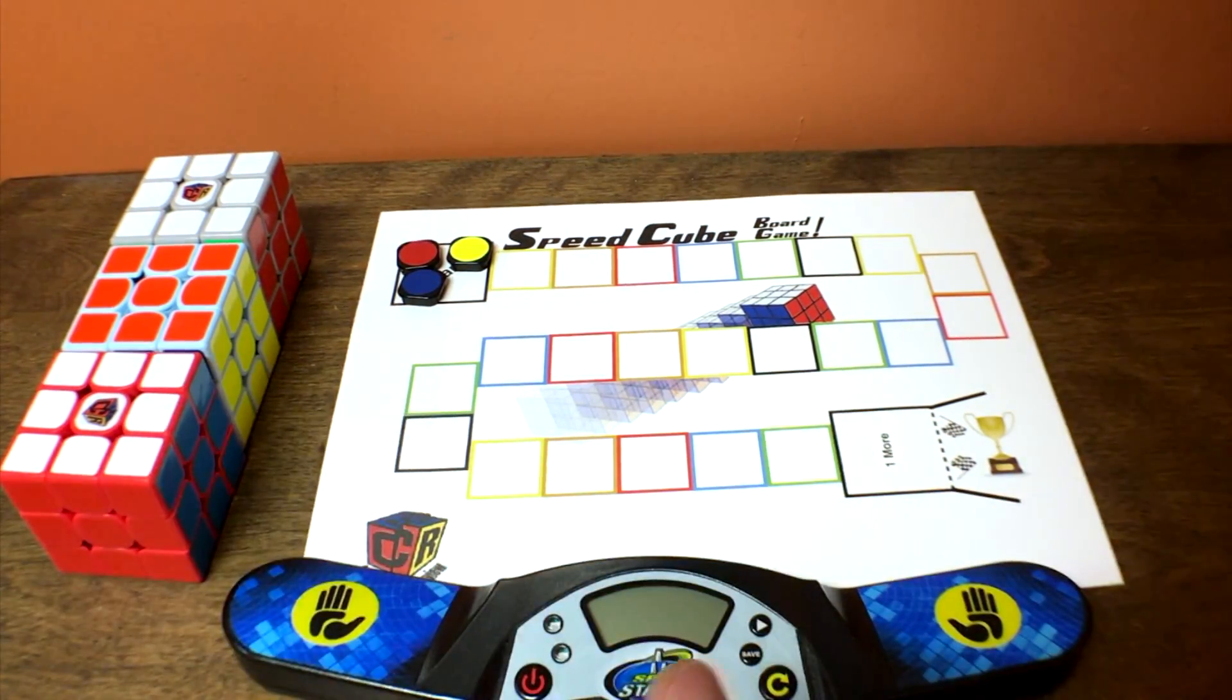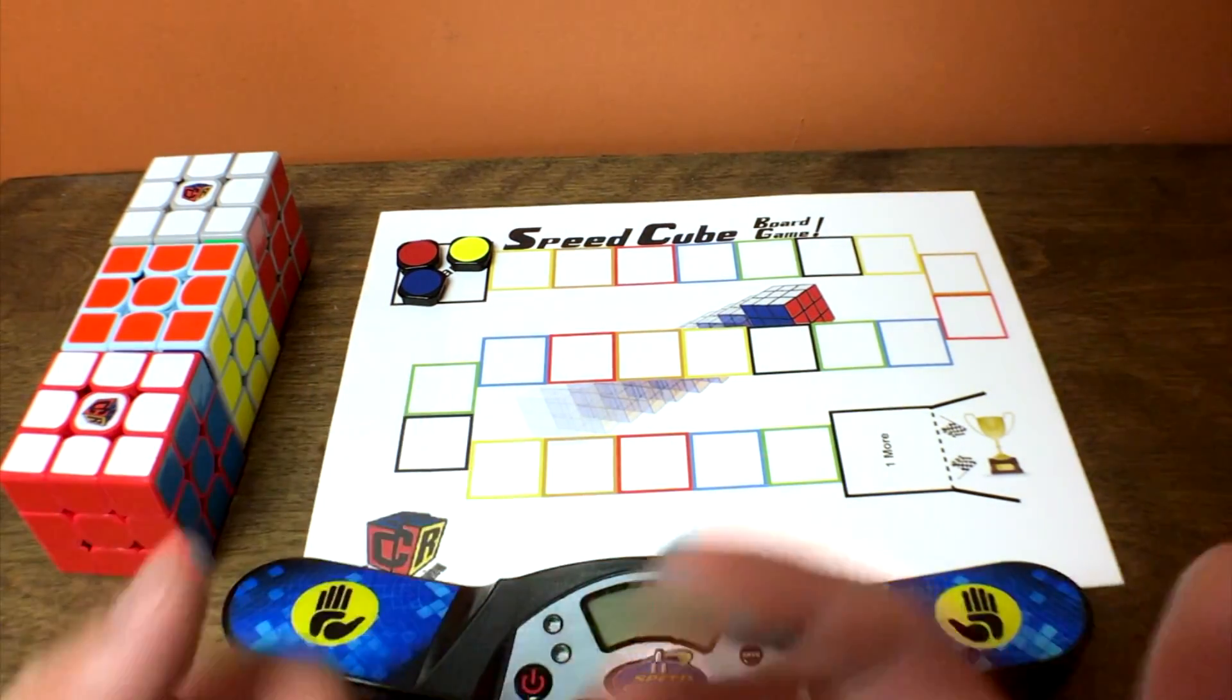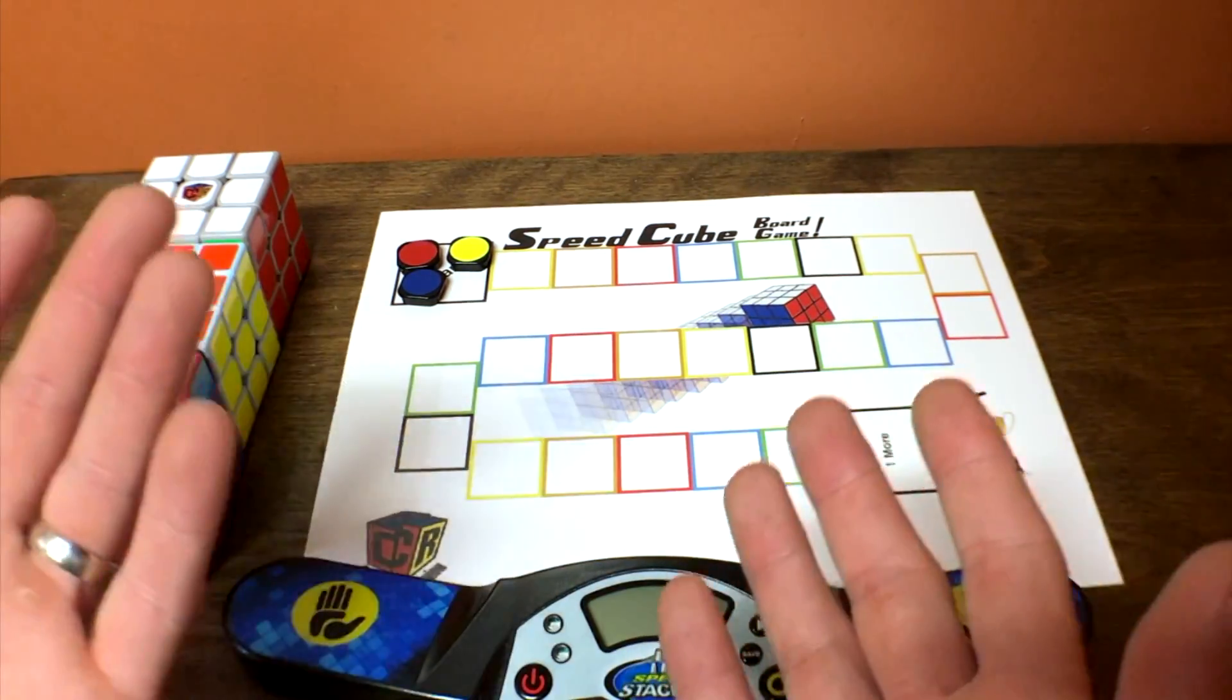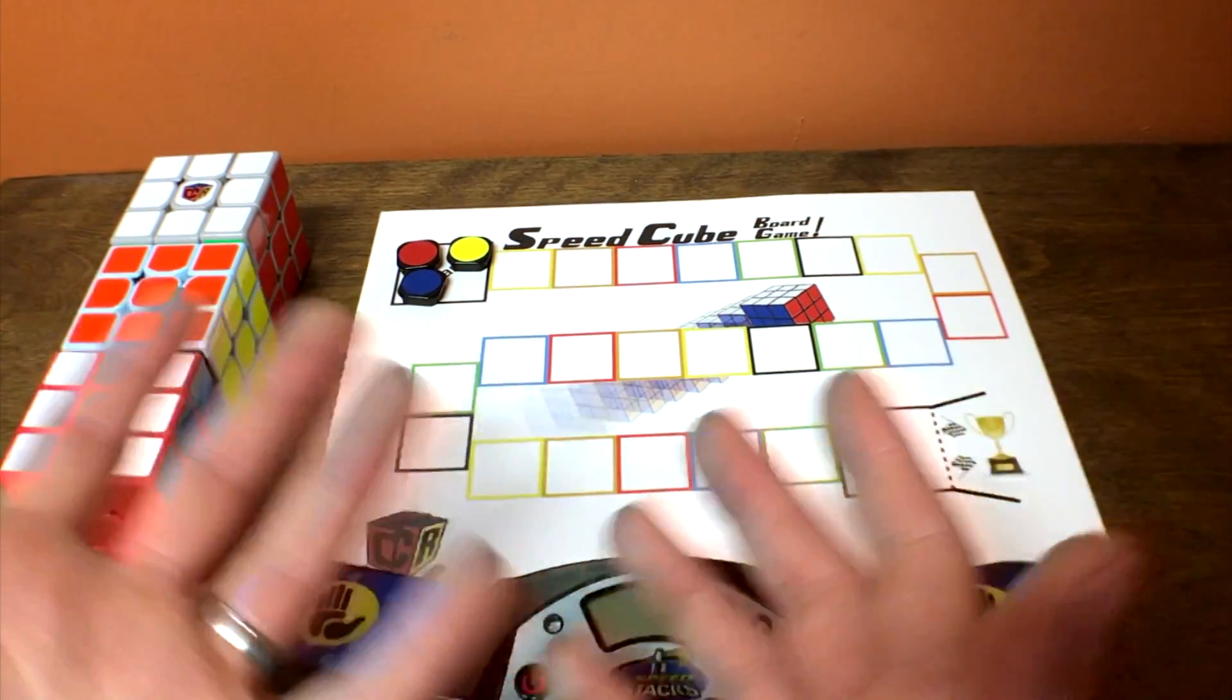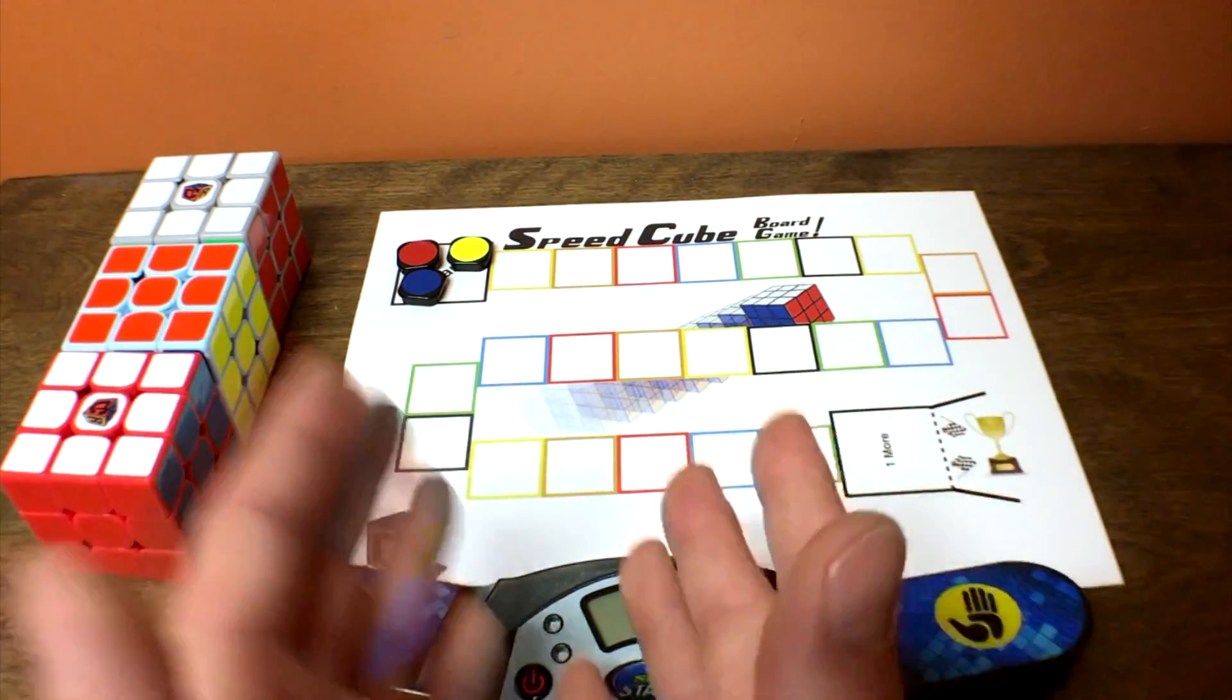So the way that it works is you start at the starting point and you get to the finish. So what you do is, it has to do with solving. So it's not like the Rubik's race board game or whatever that would be called, where it's a whole different idea. This is actually just solving the puzzle.